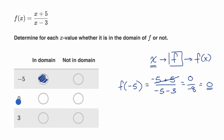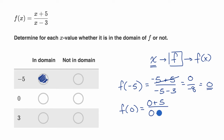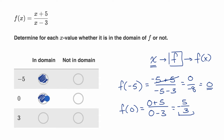What about x equals zero? Is that in the domain? Well f of zero is going to be equal to zero plus five in our numerator, and zero minus three in our denominator. That gives us five over negative three, which is negative five thirds, but this is a completely legitimate output. So the function is defined at x equals zero, so it's in the domain for sure.